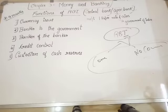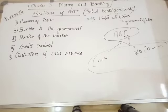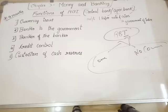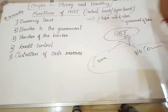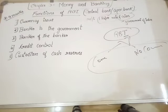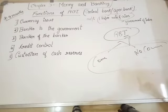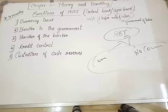The first function of RBI is that it is the issuer of currency. Currency is nothing but all the notes — the money that we circulate in the economy. RBI issues currency, but except the 1 rupee note and coins. We say minting of coins and printing of notes. So except 1 rupee note and coins, RBI does not provide those.